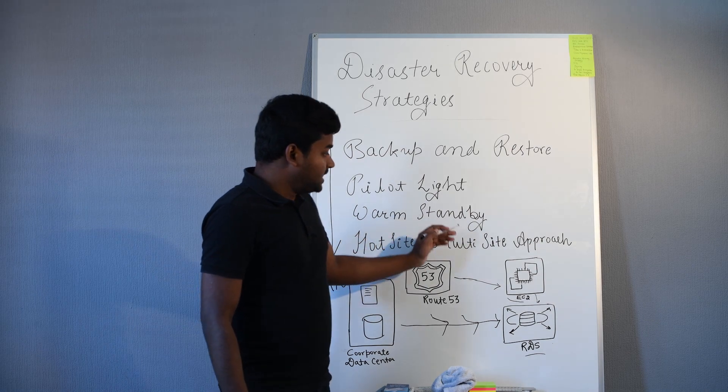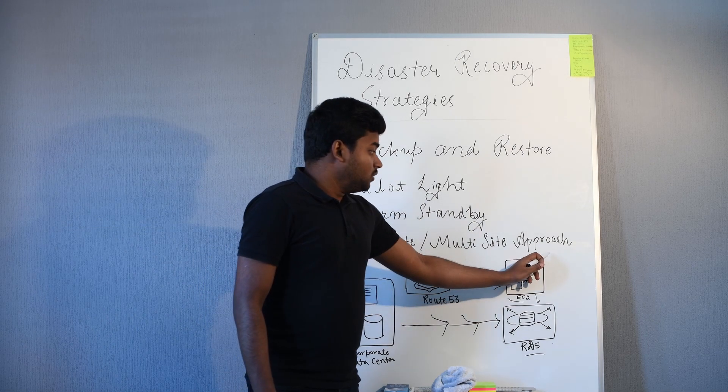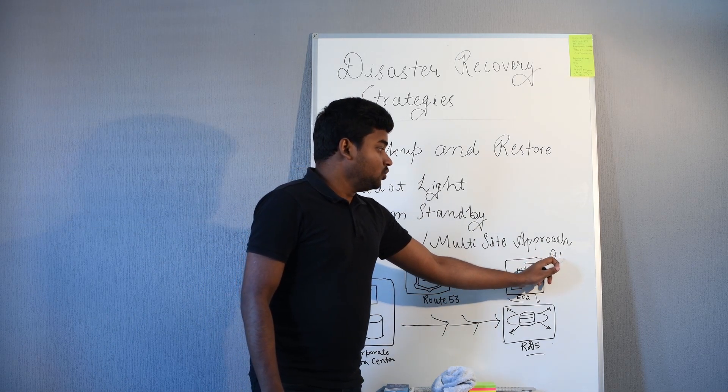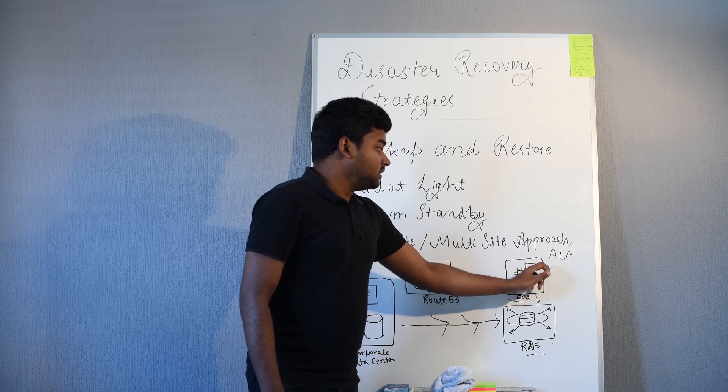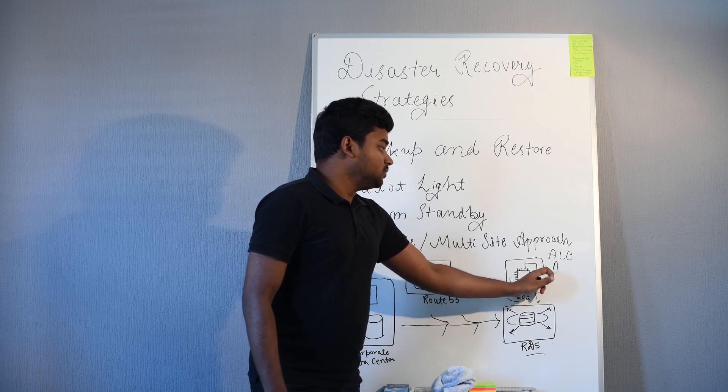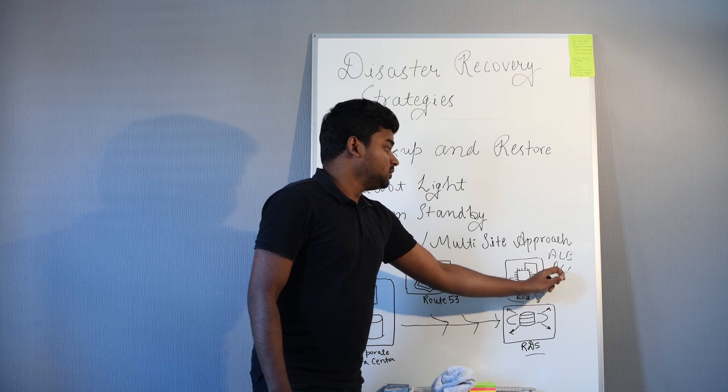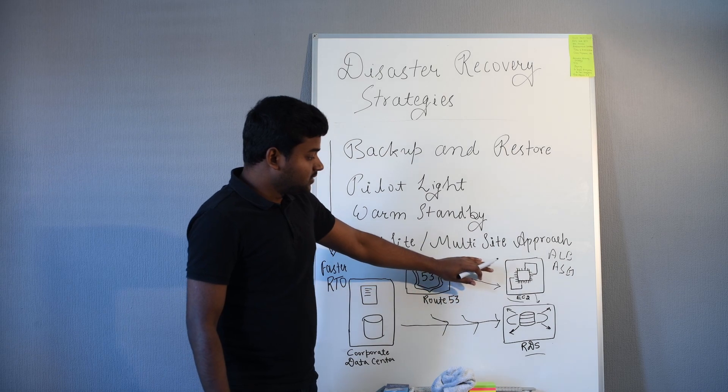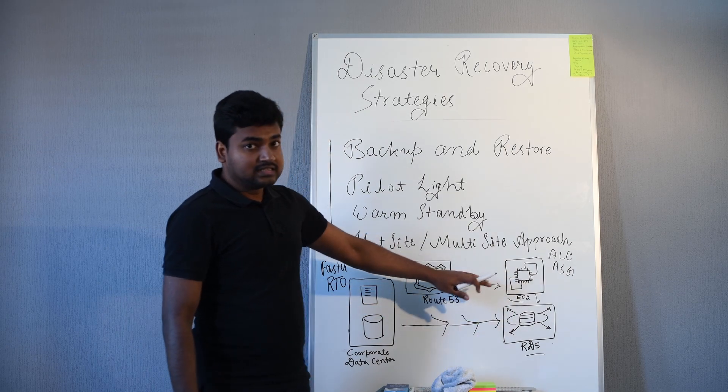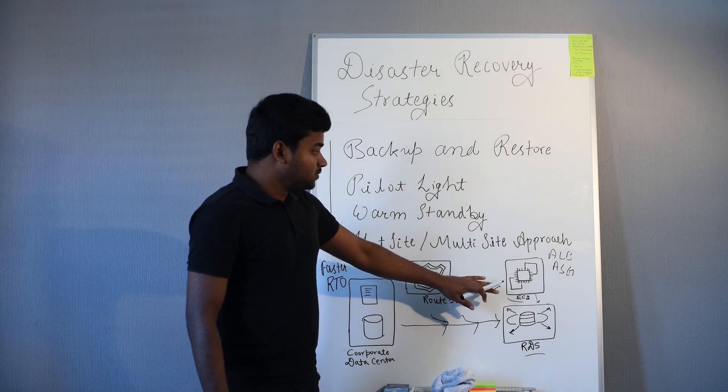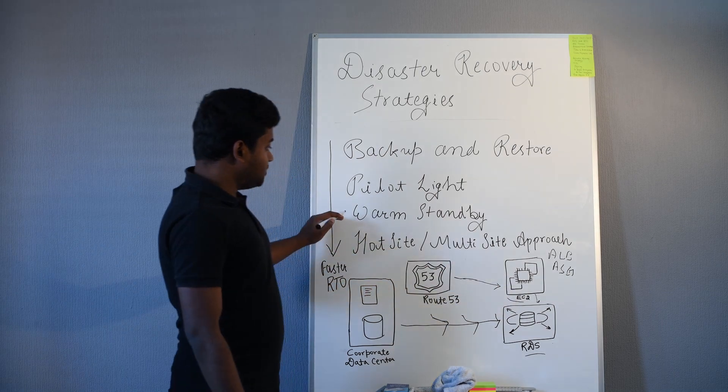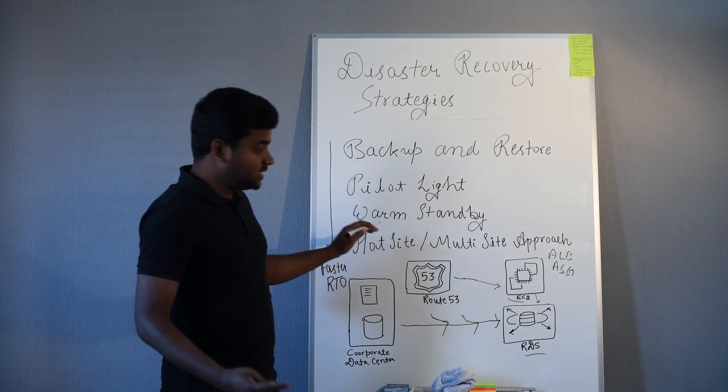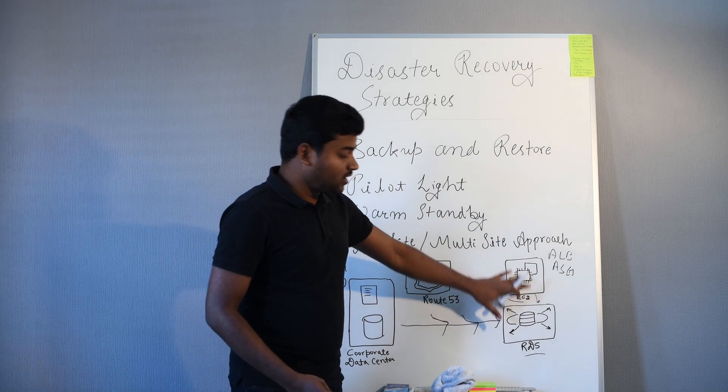This is warm standby. What will happen in case of disaster? The load balancer and auto scaling group will increase the number of EC2 instances and also spin off more RDS instances. This has better RTO and RPO but is a bit expensive because you have infrastructure up and running.